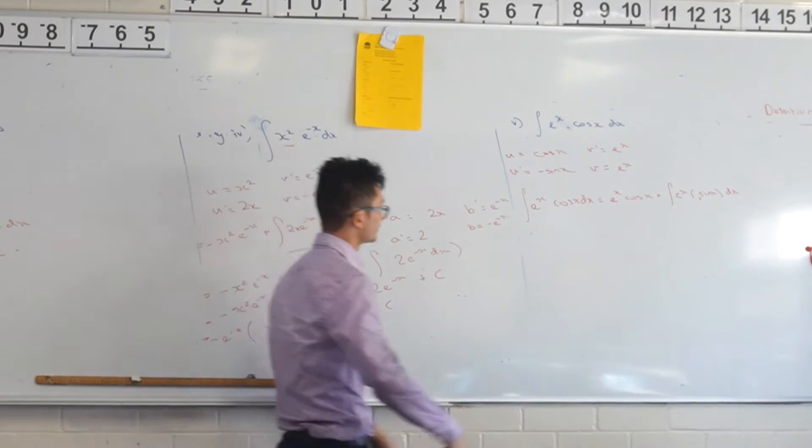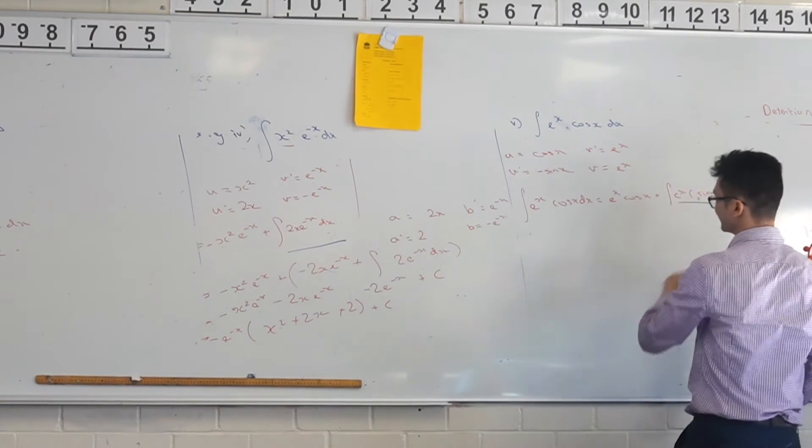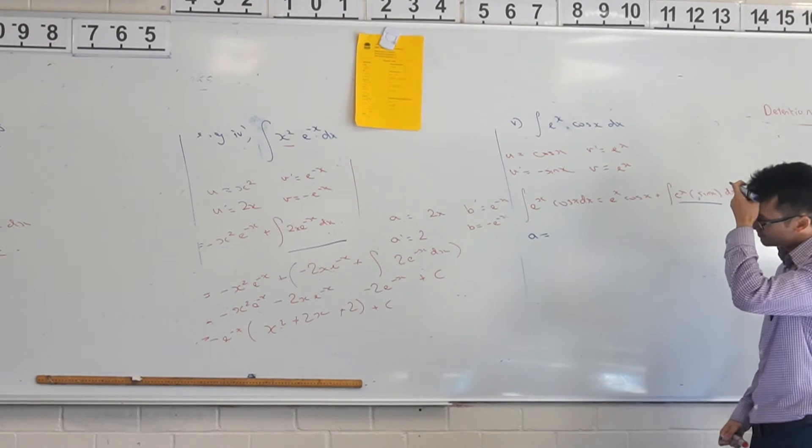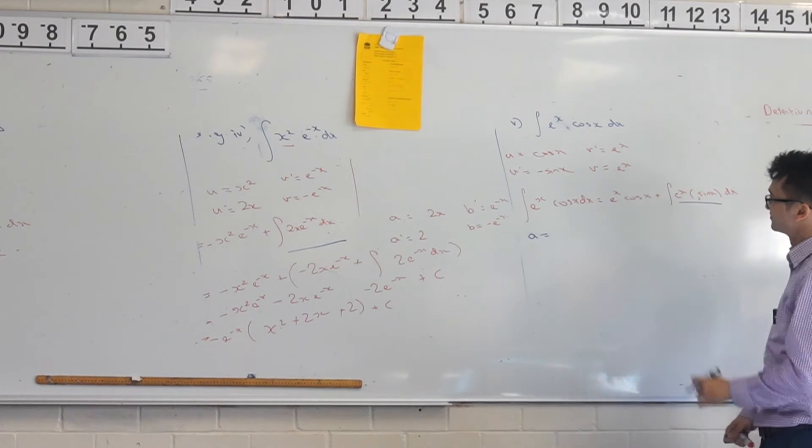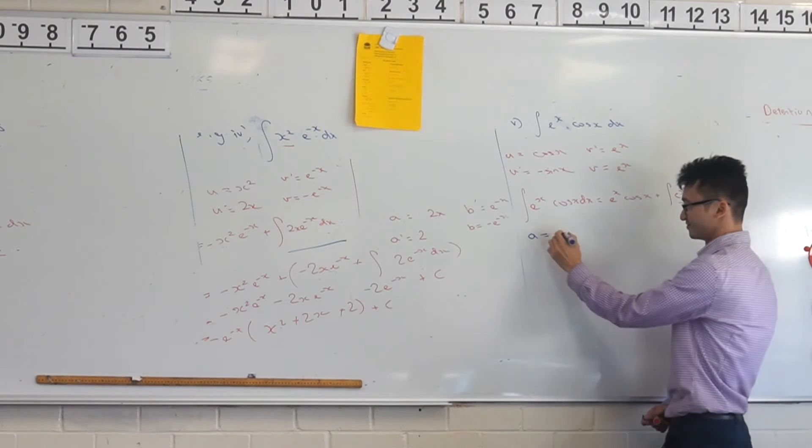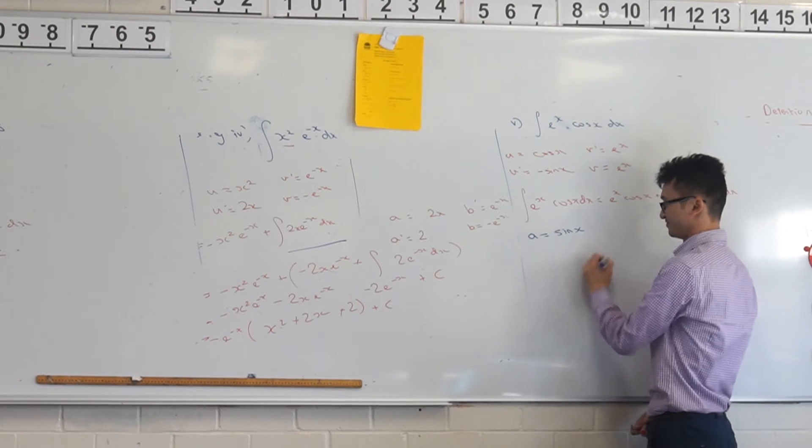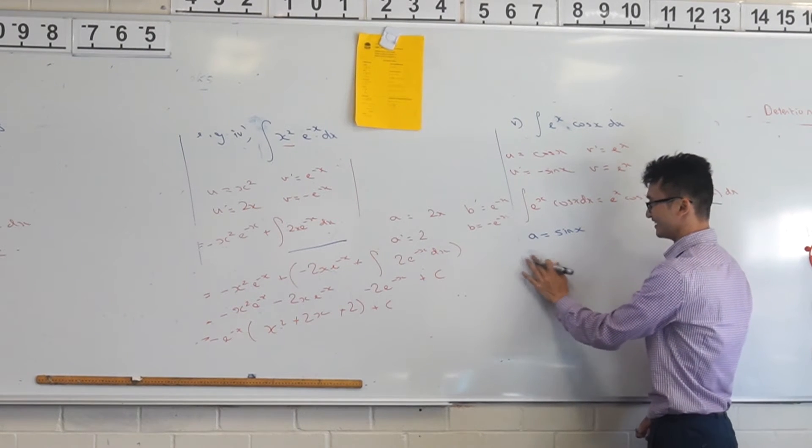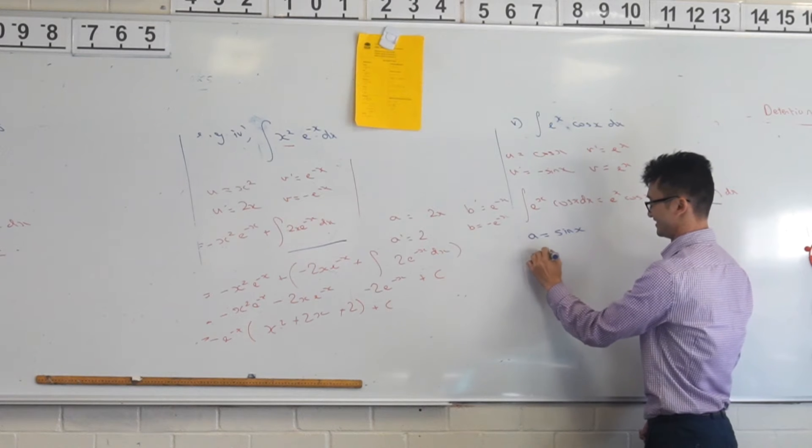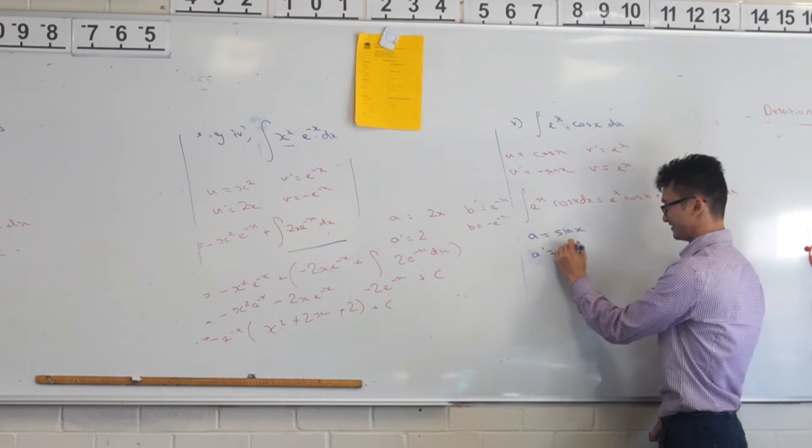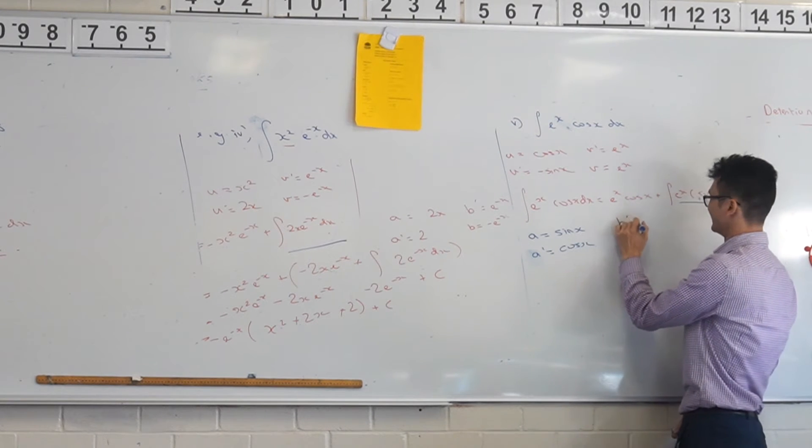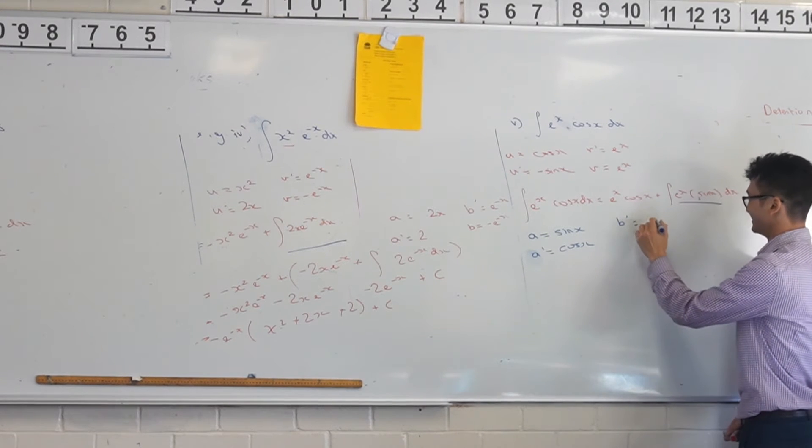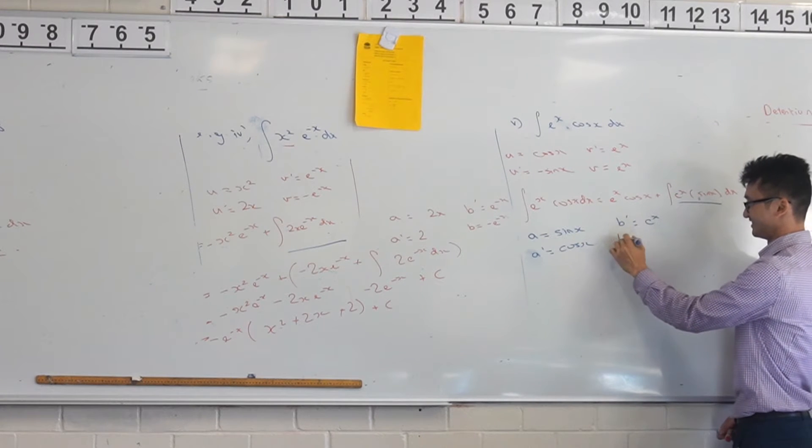I guess we'll keep with the theme of the trig function in a, so we'll go a equals sine of x. So a dash, hold on, you're right. A dash is equal to cos of x. Yep, you do that one pretty quickly. Yeah, because again, it's integration, so differentiation is fine. B dash is equal to e to the x, b is equal to e to the x.